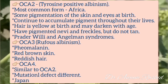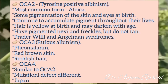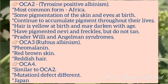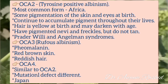Oculocutaneous albinism type 3, also known as rufous albinism, presents with reduced melanin, red-brown skin, and reddish hair. Oculocutaneous albinism type 4 is similar to type 2 but the mutation defect is different, and it is more common in people of Japan.